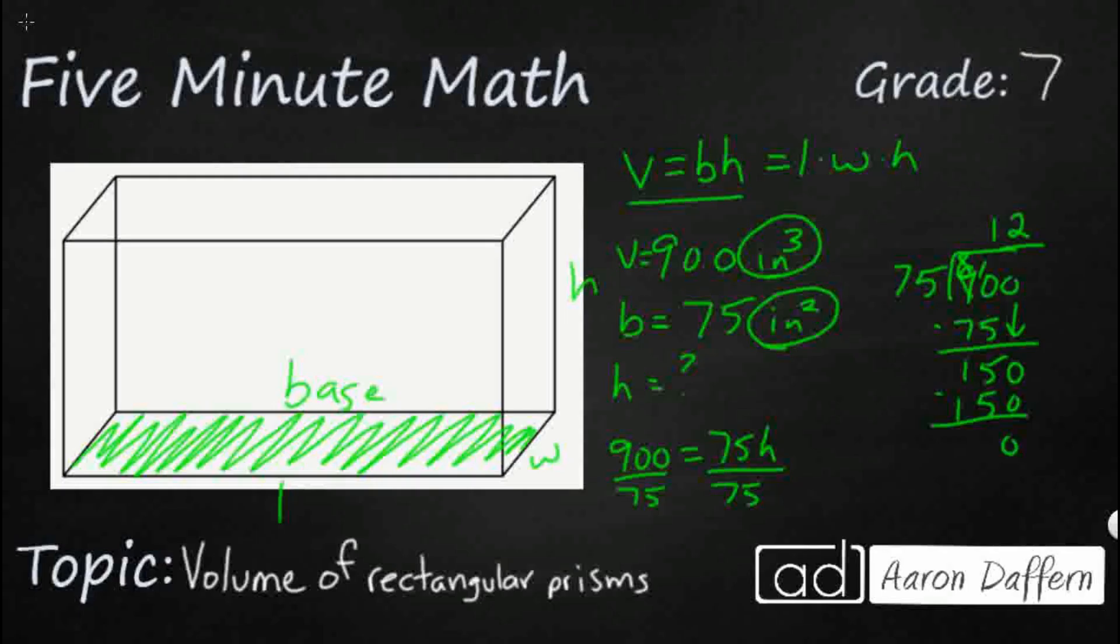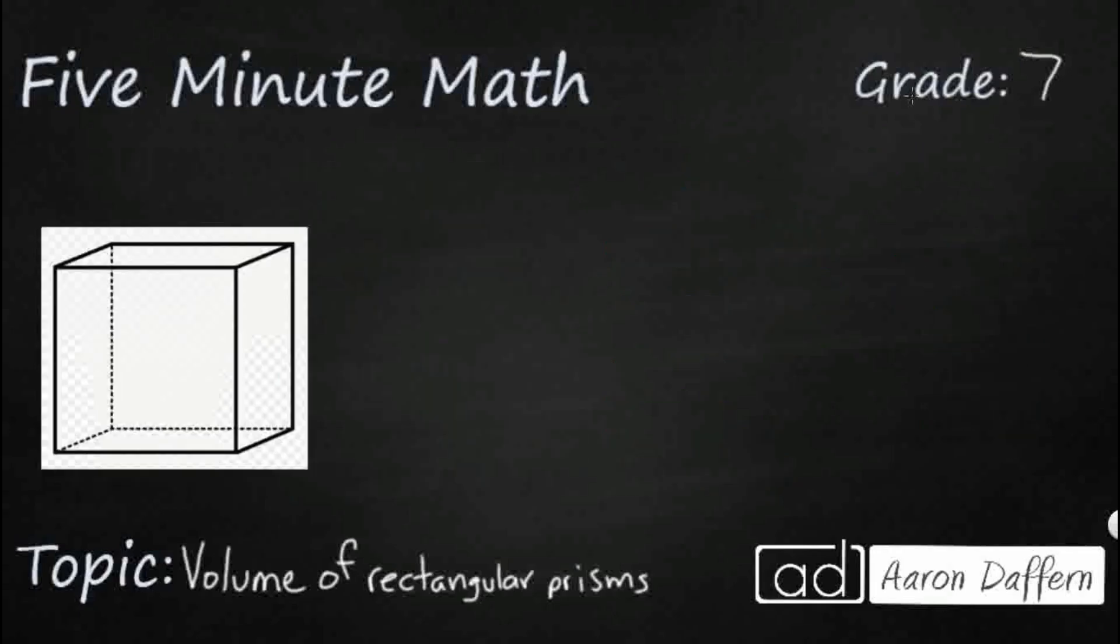So that's an example of something that we might see in a seventh grade problem of calculating to find that our height equals 12 inches. So we have a cube here, and it's still a rectangular prism.